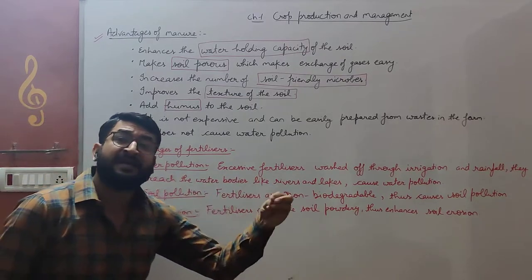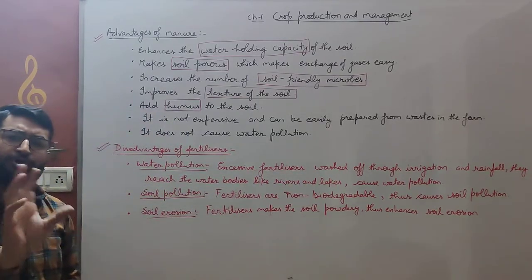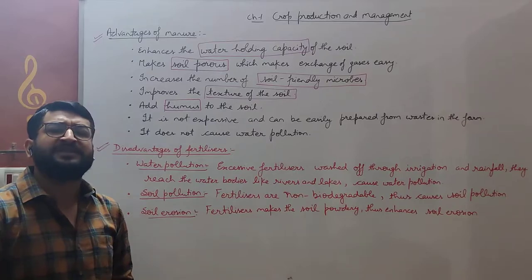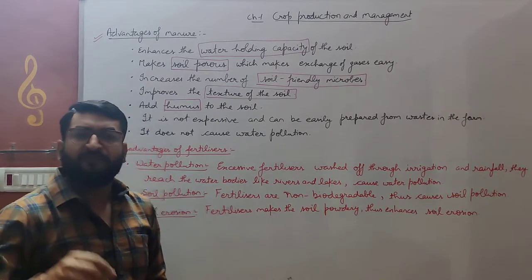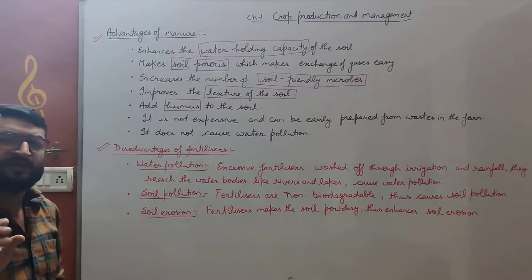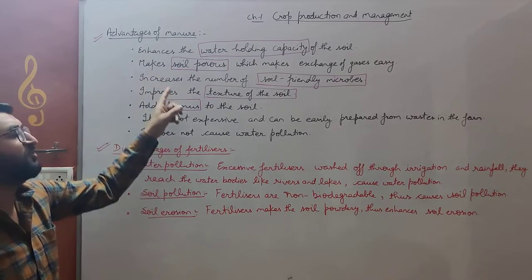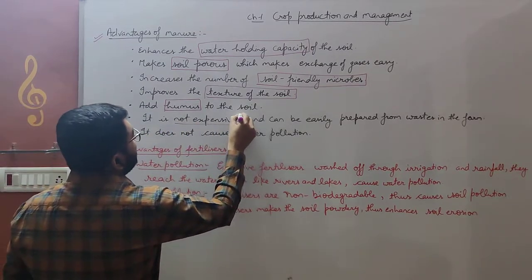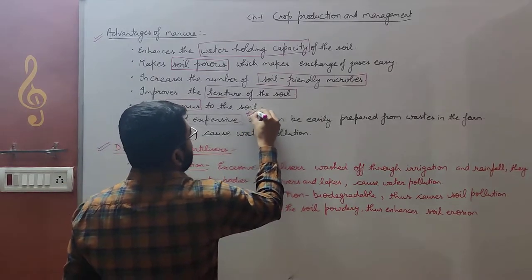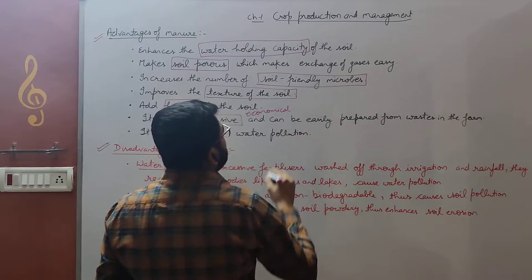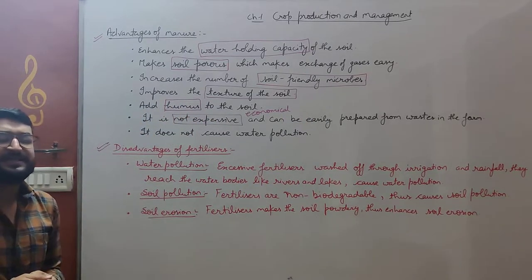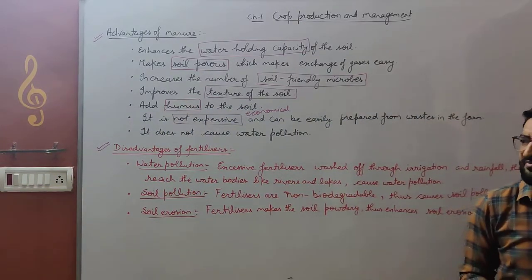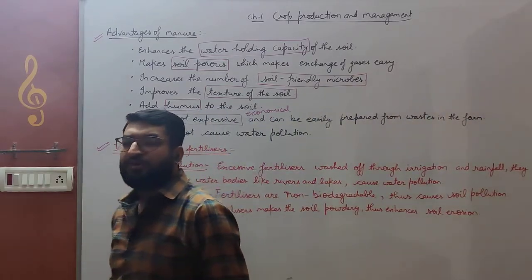Manure provides each and every kind of nutrient — nitrogen, phosphorus, potassium, etc. Fertilizers are nutrient-specific: a nitrogenous fertilizer provides only nitrogen, a phosphatic fertilizer provides only phosphorus. But manure provides all three kinds of nutrients. Manure is also economical — everyone can afford it. It can be prepared from agricultural waste through composting, so we are able to manage farm waste properly.